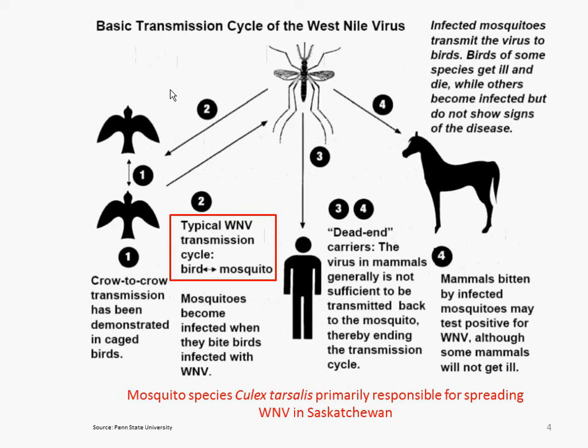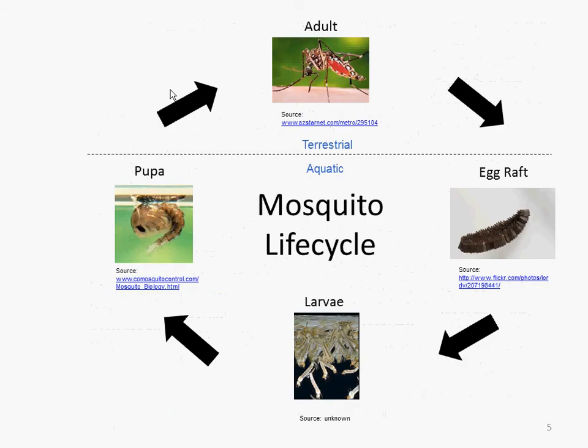Humans are what's called dead-end carriers — mosquitoes can bite and infect us, but if we're infected we don't have the virus at high enough levels for mosquitoes to get it back from us. Horses are in between — quite a few horses will die from the virus. Some animals like frogs can harbor the virus at high enough levels that mosquitoes can get it from them.